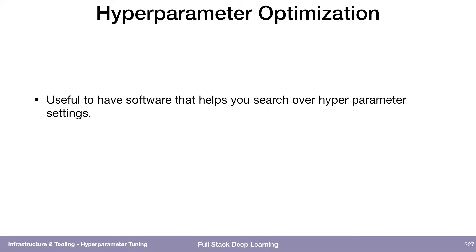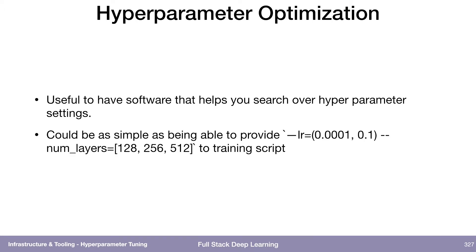Hyperparameter tuning is a common source of a lot of experiments. You find the rough model but then you want to know: should it be three layers or 30 layers or something in between? So it's useful to have software that helps you search, instead of just enumerating all the possibilities like three, five, seven, or nine layers. You want to easily say: search over learning rates between 0.0001 and 0.1, and 128, 256, and 512 layers.